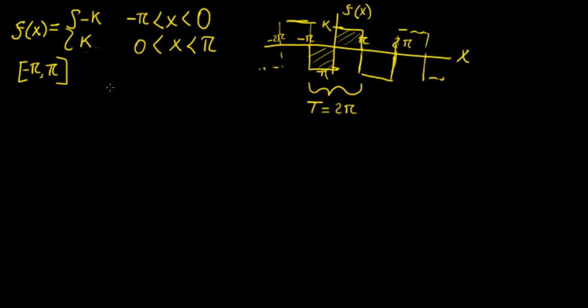To compute the Fourier series expansion of this function we need three terms: we need a-naught, aₙ, and bₙ. So we need those three Fourier coefficients.